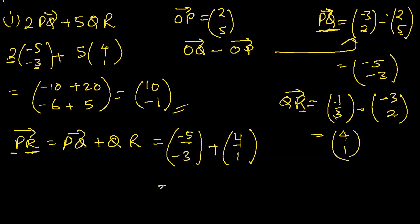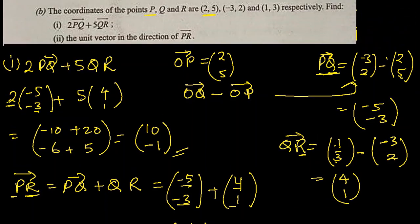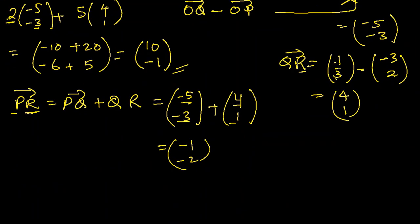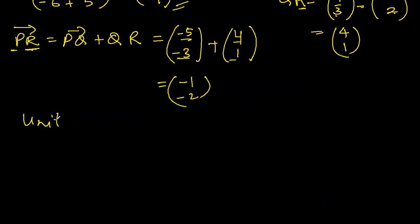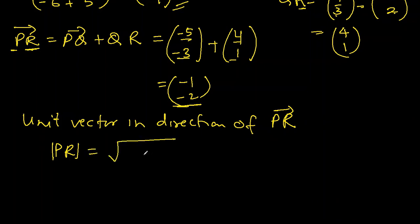We want a unit vector in direction of PR. To find the unit vector in direction of PR, first we find the modulus of PR, the magnitude of PR. So it will be (-1)² plus (-2)² will be 1 plus 4, square root 5.